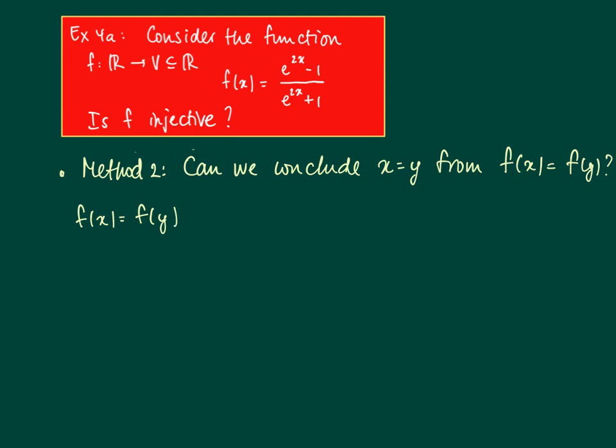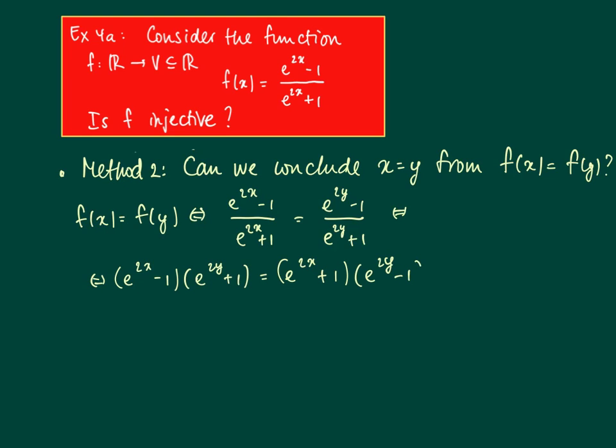Well, f(x) = f(y) is equivalent to saying that e to the power 2x minus 1 divided by e to the power 2x plus 1 equals e to the power 2y minus 1 divided by e to the power 2y plus 1. This is equivalent if we multiply on the left and on the right with e to the power 2y plus 1, and if we also multiply both sides in the equality by e to the power 2x plus 1, we get the equation that we have here.